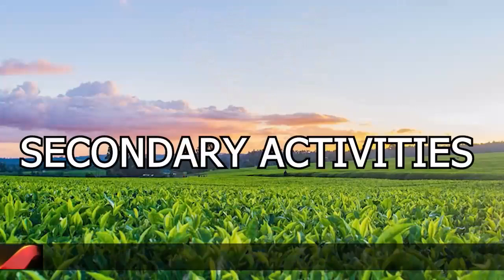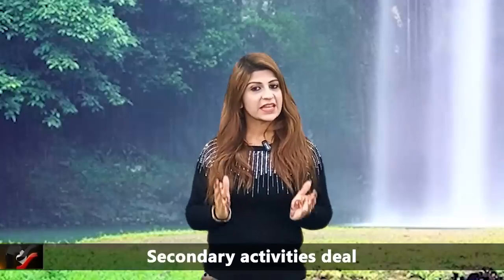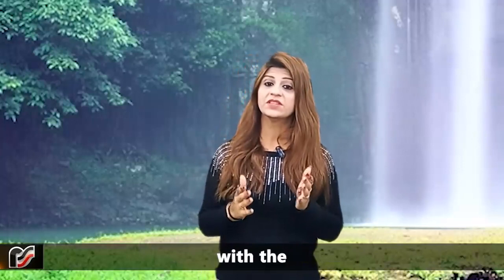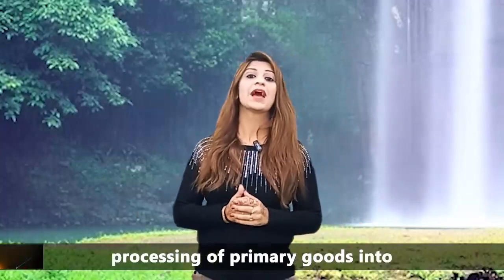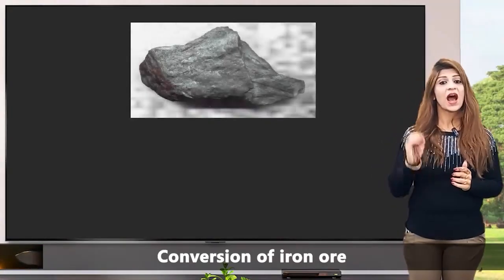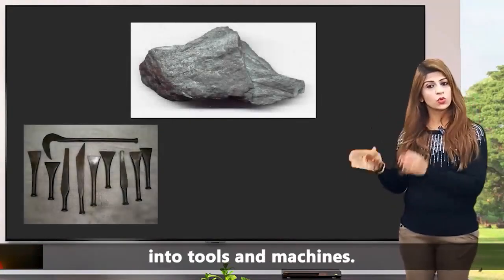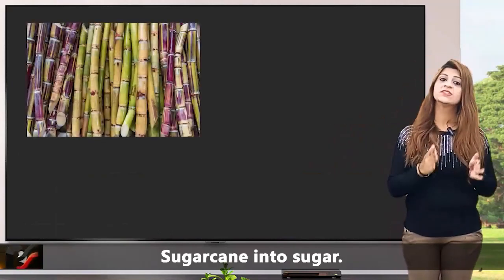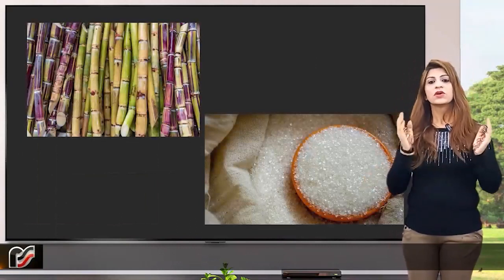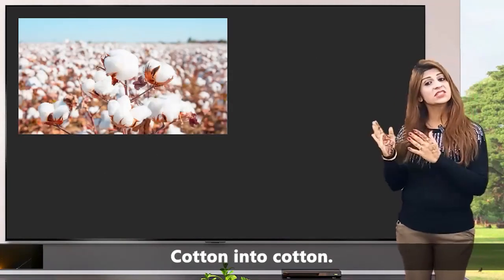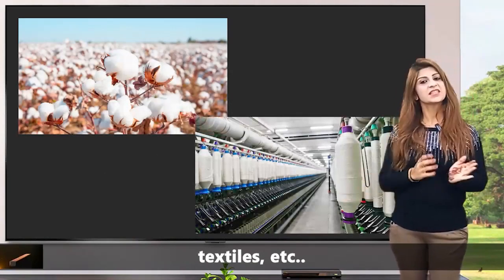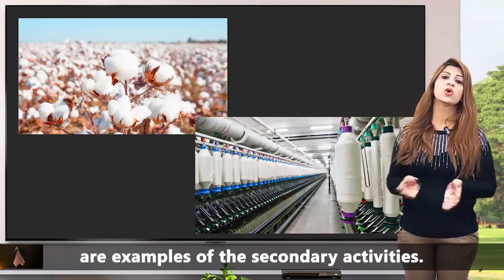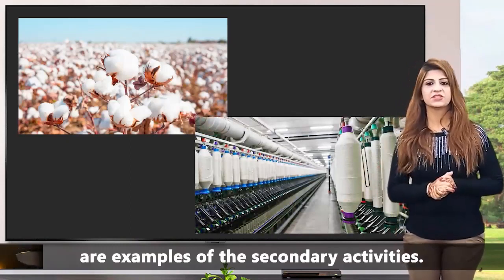Secondary Activities deal with the processing of primary goods into finished goods. Conversion of iron ore into tools and machines, sugarcane into sugar, cotton into cotton textiles, etc., are examples of secondary activities.